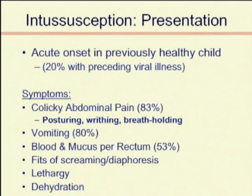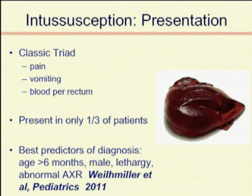This generally occurs in a healthy kid. It's acute in onset in most children; they come in with a day or less of symptoms. They can present with a whole spectrum of symptoms, but the classic triad of pain, vomiting, and blood per rectum — the classic red currant jelly stools representing clotted blood and mucus — really only occurs in about one-third of patients.